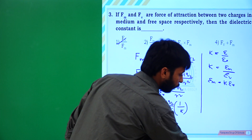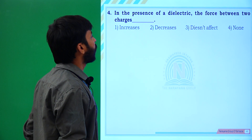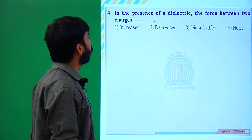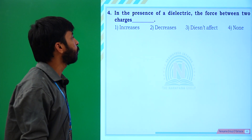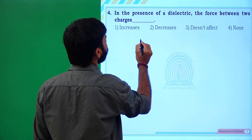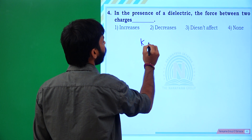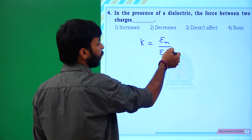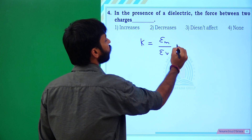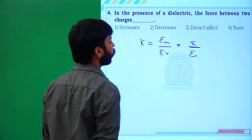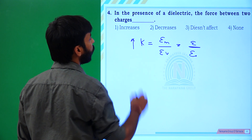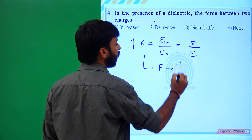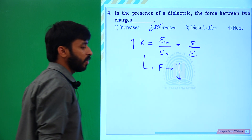Next question: in the presence of a dielectric, the force between two charges. We know K equals epsilon_M by epsilon_V, where free space gives K = E/epsilon. With respect to dielectric presence, the force between the charges decreases. The second option is the correct answer.